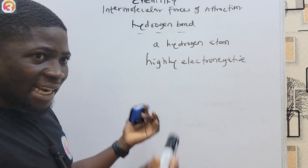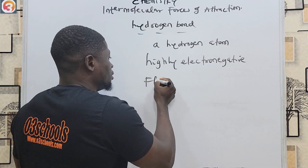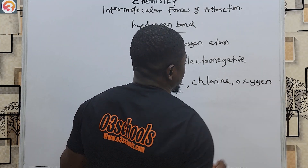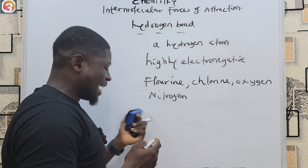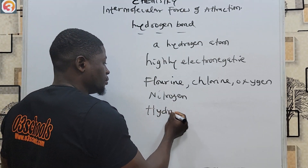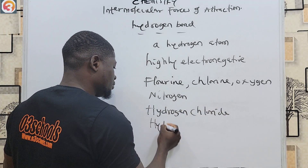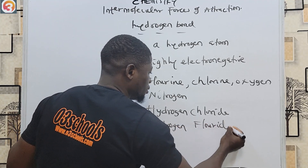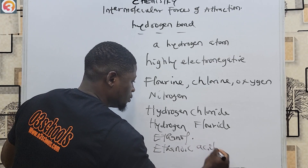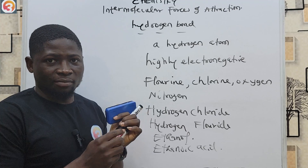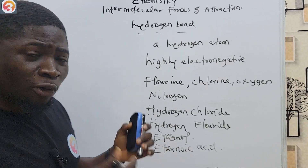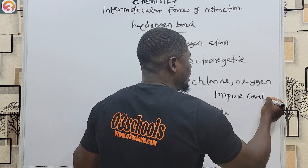Highly electronegative elements include fluorine (the most electronegative element), oxygen, and nitrogen. Compounds where hydrogen bonds are commonly found include hydrogen chloride, hydrogen fluoride, ethanol, and ethanoic acid. Hydrogen bonds are also found in impure covalent compounds.